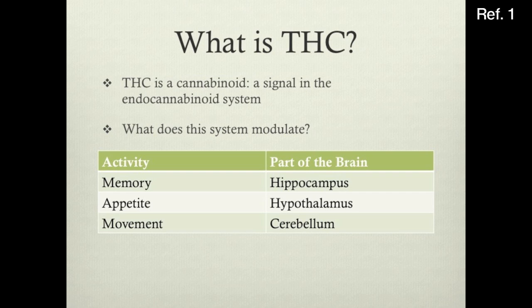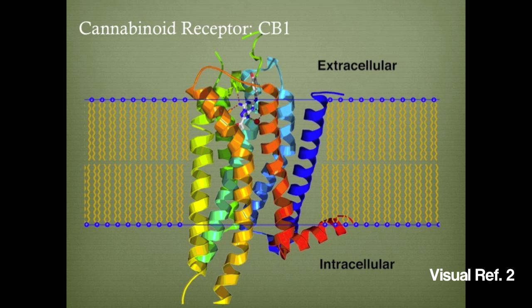These properties are controlled by the hippocampus, the hypothalamus, and the cerebellum respectively. There is a high concentration of the cannabinoid receptor CB1 — a G-protein coupled receptor — in these areas of the brain.